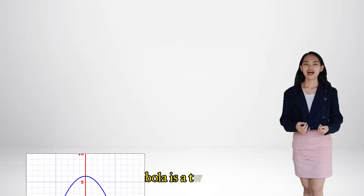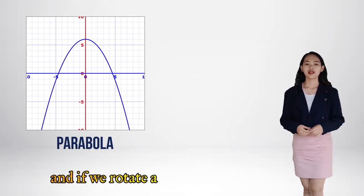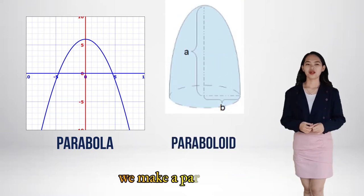In this case, a parabola is a two-dimensional figure. And if we rotate a parabola around an axis, we make a paraboloid. And that makes a paraboloid a solid of revolution or a solid.